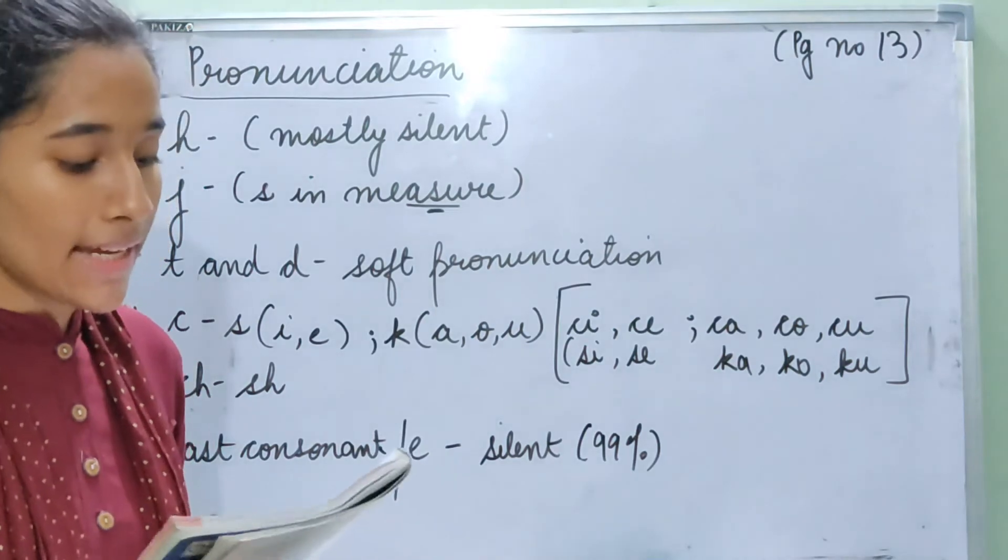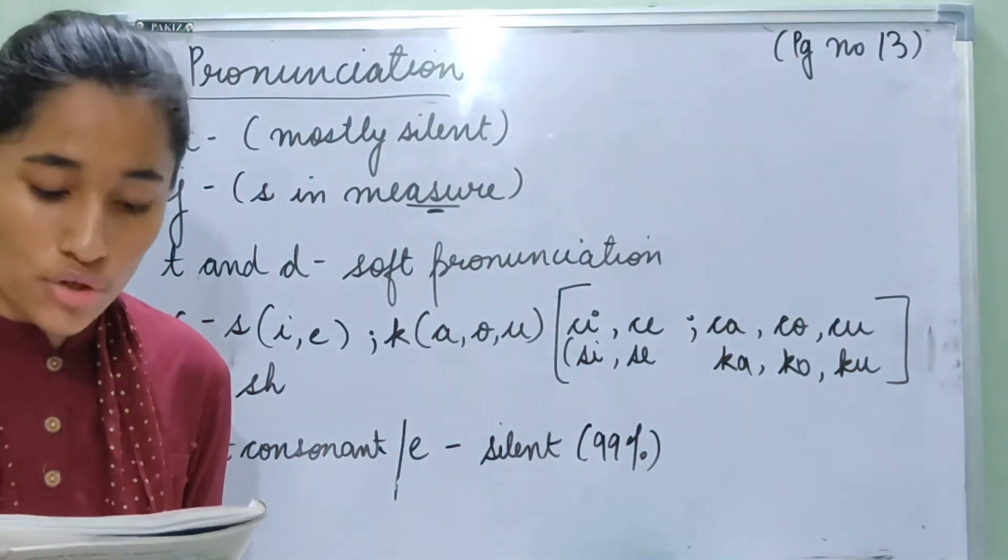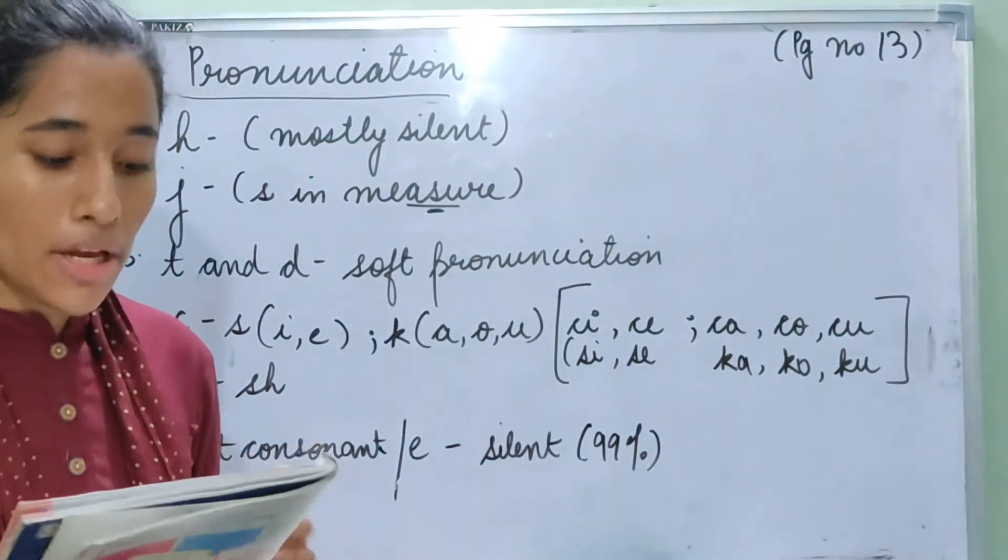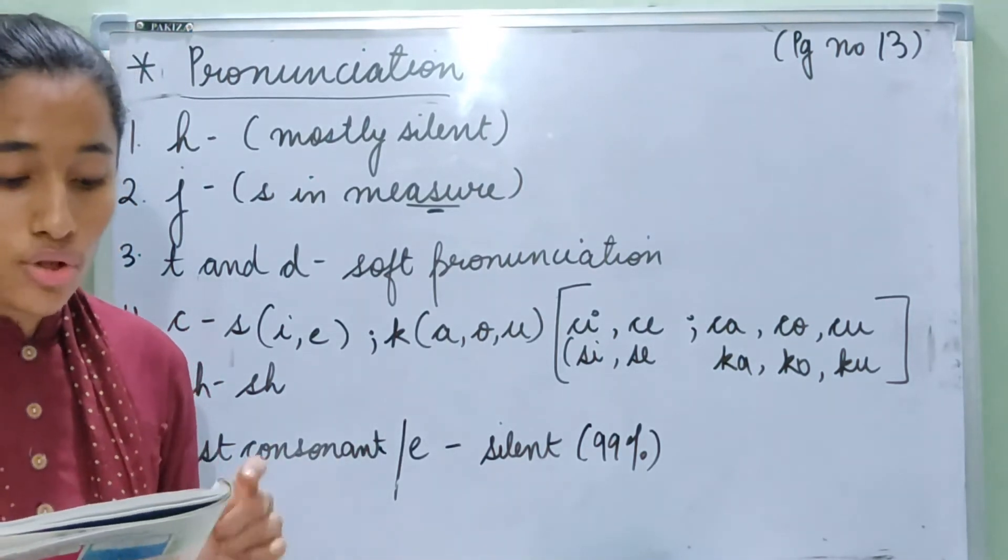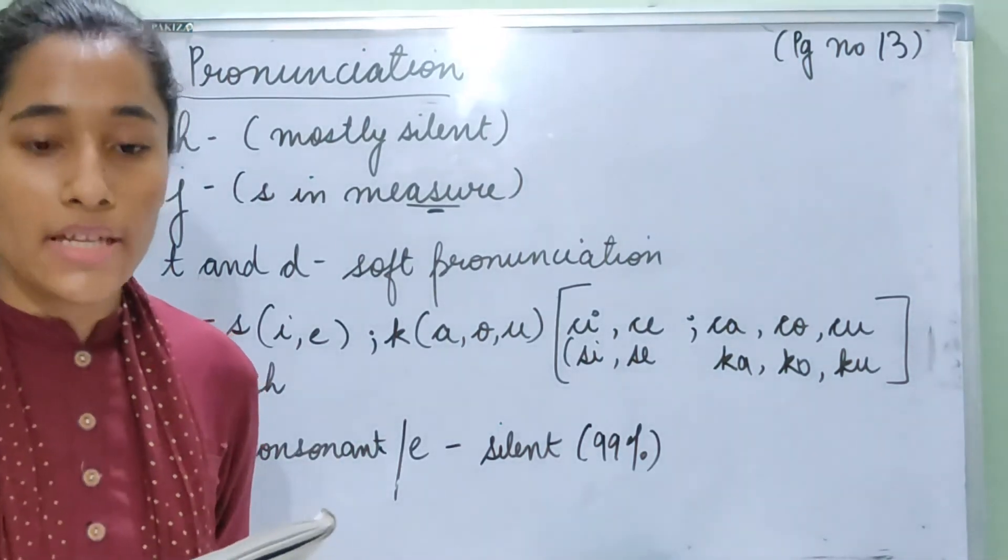Second, the letter J sounds like measure, the S in measure. So J or G has a sound of J. J means I. Jardin means garden.